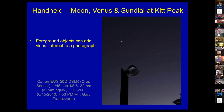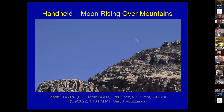Adding a foreground object can create a lot of visual interest — here's a shot of the moon, Venus, and a sundial at Kitt Peak. I shot this last week while hiking in Tucson: the first quarter moon rising over the mountains in Pima Canyon. It just caught my eye and was a perfect opportunity for an astrophoto with foreground subject material.